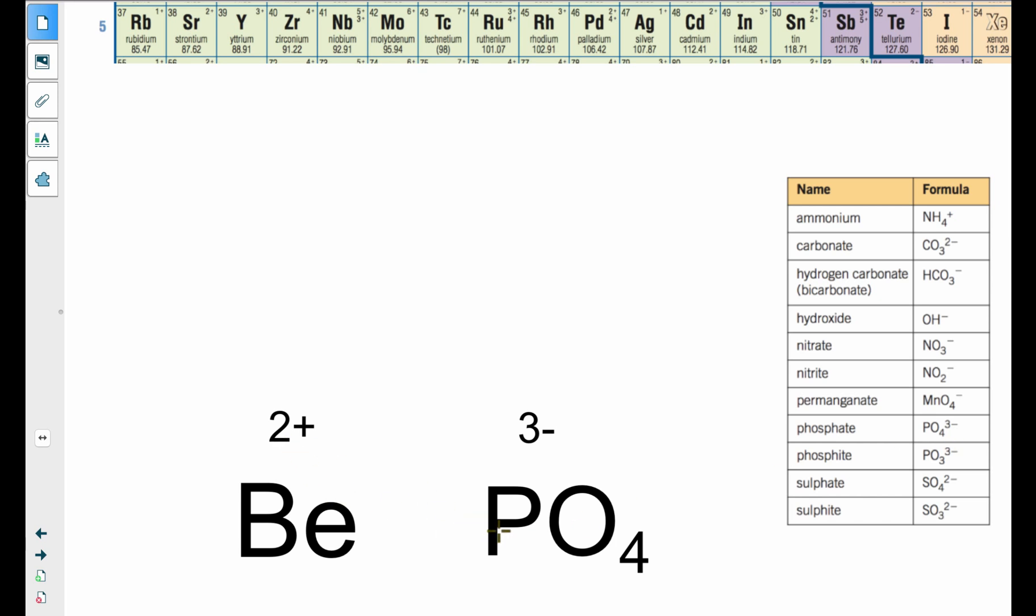So beryllium, 2 plus, phosphate, PO4 with a 3 minus. Do the crisscross. I will need 3 berylliums for each 2 phosphates.